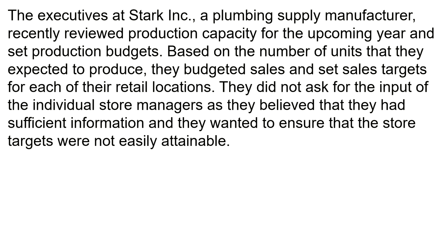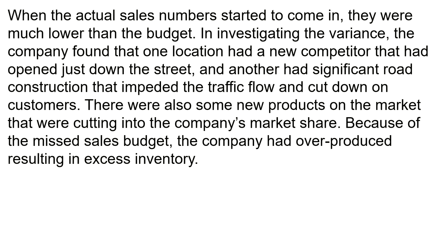The executives at Stark Inc., a plumbing supply manufacturer, recently reviewed production capacity for the upcoming year and set production budgets based on the number of units they expected to produce. They budgeted sales and set sales targets for each of their retail locations. They did not ask for the input of individual store managers, as they believed they had sufficient information and wanted to ensure that store targets were not easily attainable. When actual sales numbers came in, they were much lower than the budget. Investigating the variance, the company found that one location had a new competitor that opened just down the street, another had significant road construction that impeded traffic flow and cut down on customers, and there were also new products on the market cutting into the company's market share. Because of the missed sales budget, the company had overproduced, resulting in excess inventory.